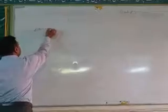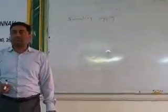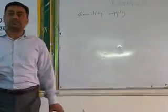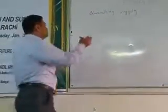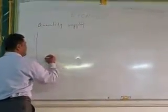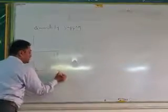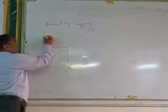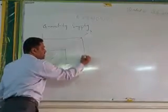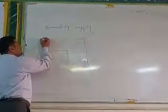Quantity supply: if other factors remain constant, quantity supply changes due to the change in price. This is called change in quantity supply. Like if you have a supply, due to the change in price, if price changes quantity supply, that is called change in quantity supply.